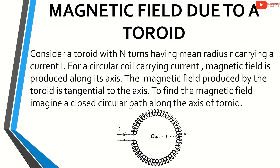Consider a toroid with N turns having mean radius r, carrying a current i. For a circular coil carrying current, magnetic field is produced along its axis. The magnetic field produced by the toroid is tangential to the axis. To find the magnetic field, imagine a closed circular path along the axis of the toroid.